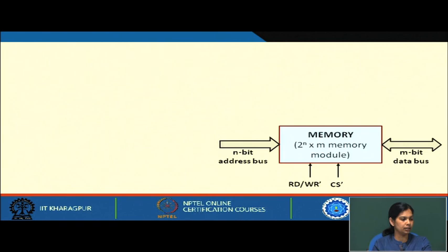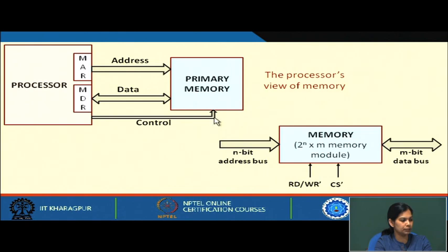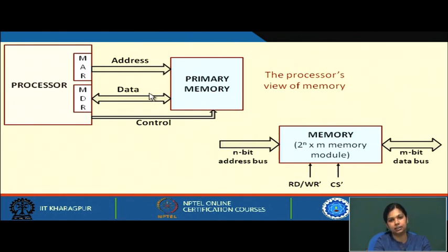As we know, for an n-bit address bus we can have 2 to the power n memory locations, and an m-bit data bus. We have read, write, and control signals, and now the memory address register and memory buffer register are connected through address and data lines to the primary memory. This is the processor's view of the memory, and we have some control lines.